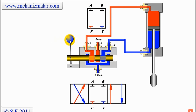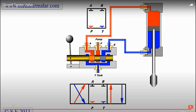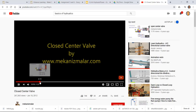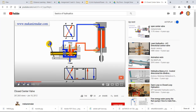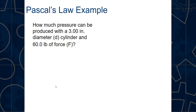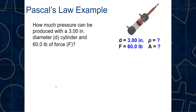How much pressure can be produced with a 3-inch diameter cylinder and a 60-pound force? Our knowns: diameter is 3 inches, force is 60 pounds. We don't know the area or the pressure. To find pressure using Pascal's formula, we first need to find the area.